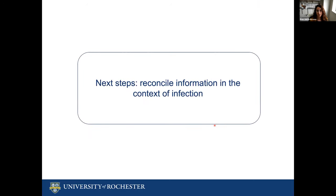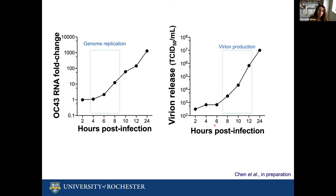While we were waiting on the BSL-3 clearance and receiving the personal protective equipment, we performed some of these assays using another coronavirus — a biosafety level 2 coronavirus that infects humans, OC43, which also affects the respiratory tract. The first thing we did was assess at what time post-infection we are detecting genome replication, because by then the remodeling of the cellular membranes must have already happened. We can see an exponential increase in the amount of copies of genomic RNA accumulated between 4 and 8 hours post-infection.